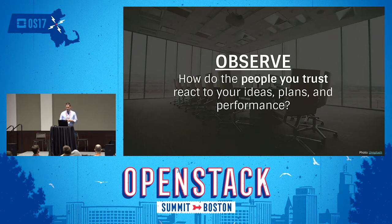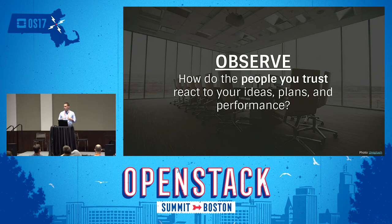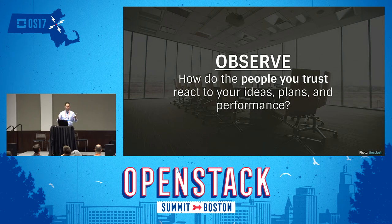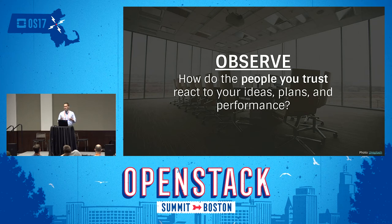We can use the OODA loop to deal with imposter syndrome in ourselves and in others. The first step is Observing: ask how do people you trust react to your ideas, plans, and performance? The 'people you trust' part is important. Find those people, and when you go into a meeting and propose something, observe the response. If someone says 'we should have been doing this a year ago' but you went in thinking it was a terrible idea — make that observation.